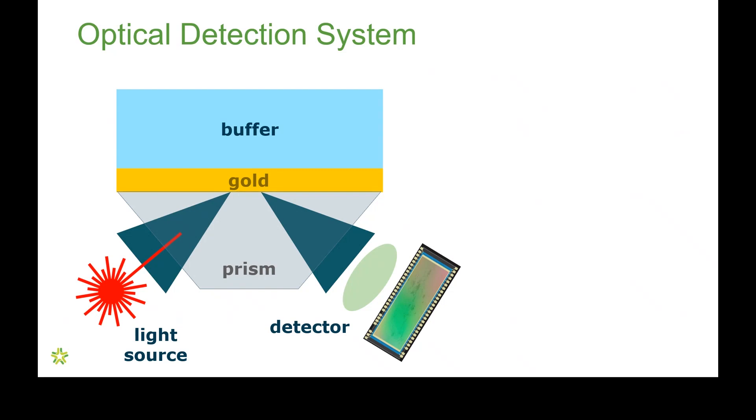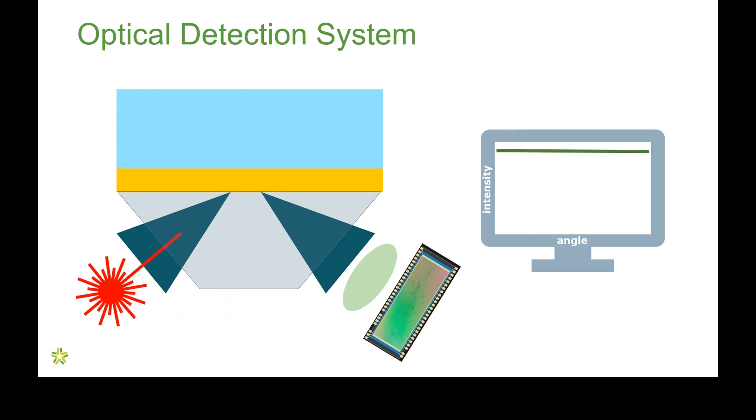Now, if all of that light is reflected, then the signal we obtain would look like this when we plot intensity versus angle. All the light is reflected, so we have a very high intensity across all the angles.